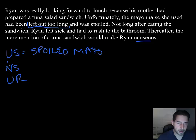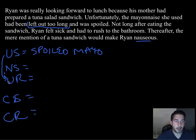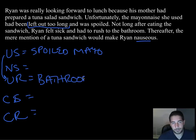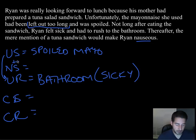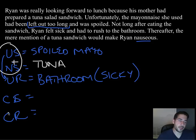The unconditioned stimulus is the spoiled mayonnaise — that's going to make anybody run to the bathroom. The unconditioned response is getting sick and going to the bathroom. The neutral stimulus is tuna — the mention of tuna. Remember the unconditioned stimulus always leads to the unconditioned response: spoiled mayo makes you sick. Now we pair the unconditioned stimulus and the neutral stimulus — spoiled mayo paired with the tuna.